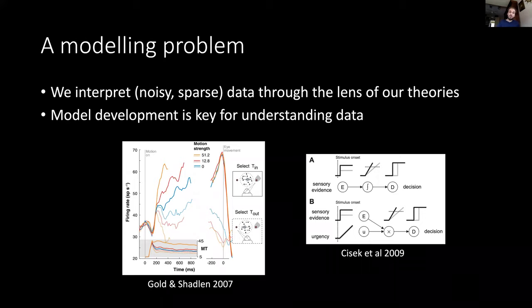What reinforcement learning and these decision-making models have in common is that you could say these are models that model the algorithmic level of understanding. We're looking at models that formalize the algorithms that the brain is hypothesized to implement, but these models are agnostic when it comes to the actual implementation in the brain itself.